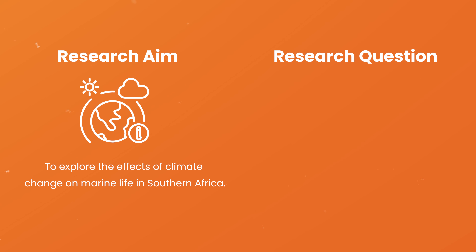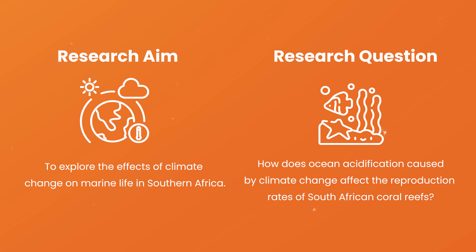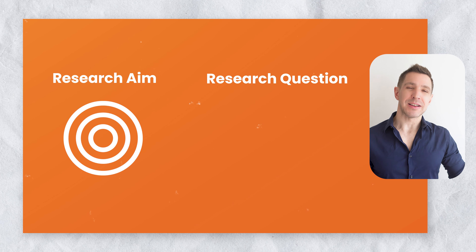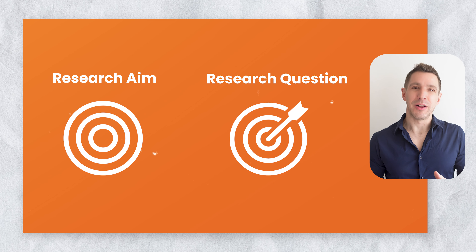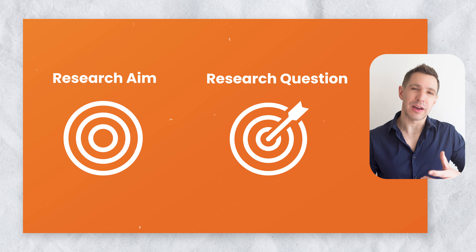For example, in a study your research aim might be to explore the effects of climate change on marine life in southern Africa. Then, linked to this, your research question could be: how does ocean acidification caused by climate change affect the reproduction rates of South African coral reefs? The research aim provides a general focus while the research question details exactly what you want to find out. Going back to our earlier analogy, you can think of the research aim as the dartboard itself, while the research question is the bullseye — you're aiming at the board at all times, but the bullseye is what you're really narrowed in on.